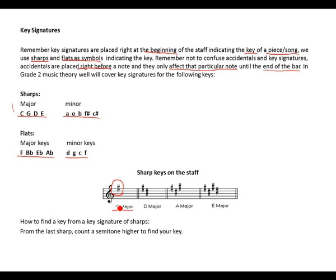G major has only one sharp: F sharp. D major has two sharps: F sharp and C sharp. A major has three sharps: F sharp, C sharp and G sharp. E major has four sharps: F sharp, C sharp, G sharp and D sharp.